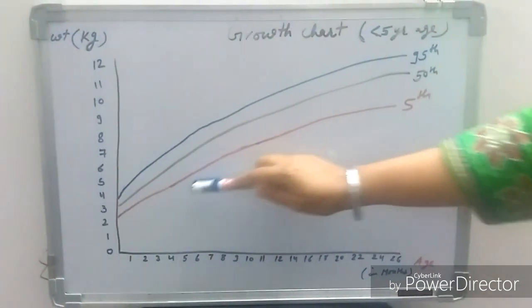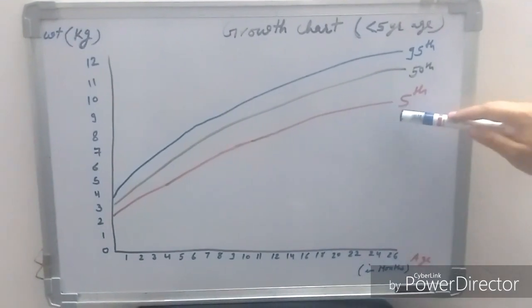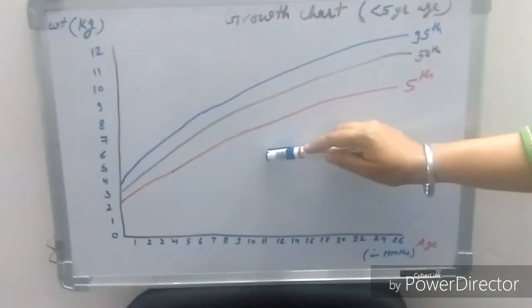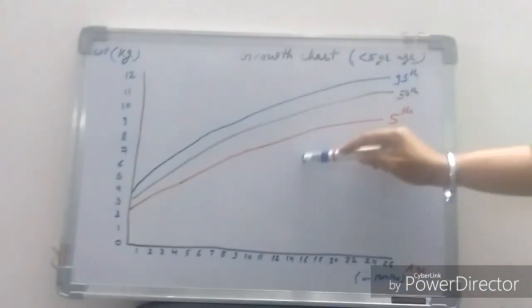If weight is below 5th percentile, that means baby is not gaining the weight according to age. So we can label it failure to thrive or malnourished baby.